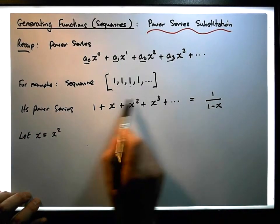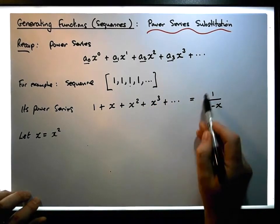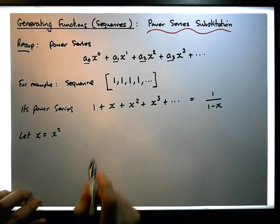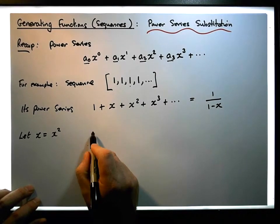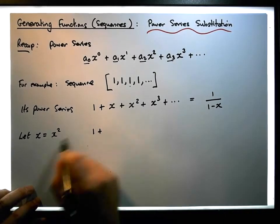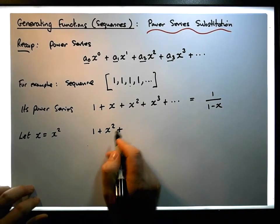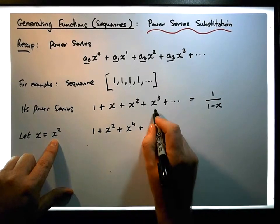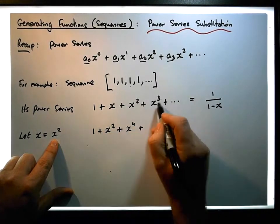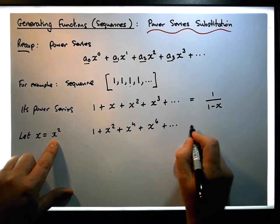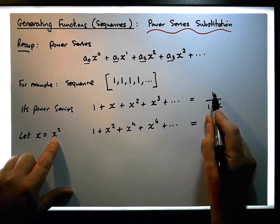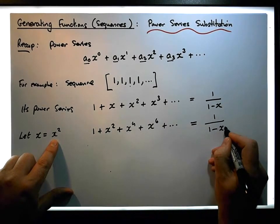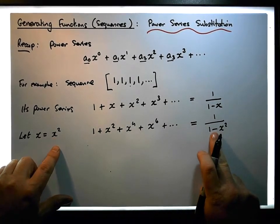Let's take this power series — we know it's associated with this particular sequence, and we know its generating function. We substitute in x squared everywhere we see an x. So we get: one, plus x squared, plus x squared all squared which is x to the four, plus x squared cubed which is x to the six, and so on. The generating function becomes one over one minus x squared, since x is substituted for x squared.